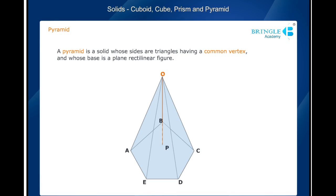The perpendicular which is drawn from the vertex of a pyramid to its base is called the height of the pyramid. In the figure shown on the screen, ABCDE is the base of the pyramid. OP is the height of the pyramid.